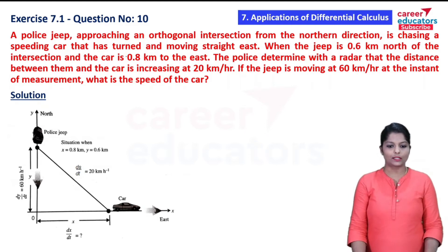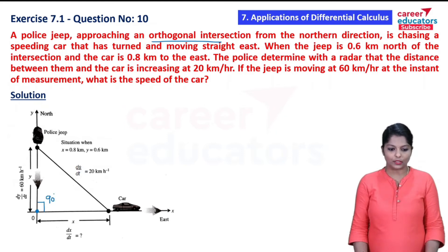that has turned and is moving straight east. The police jeep is coming from the north direction at an orthogonal intersection. Orthogonal intersection means four roads meet at a junction, where each road's angle is 90 degrees. The police jeep is chasing a car going in the east direction.